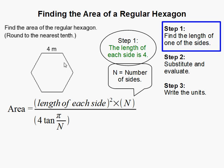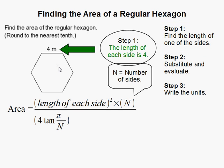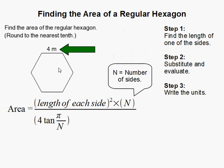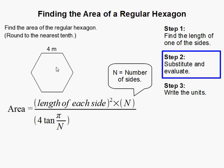In this problem we're given that the length of each side is 4 meters. Now we simply have to substitute that into this equation. This is just one way of finding the area of a regular hexagon — there are many other ways.